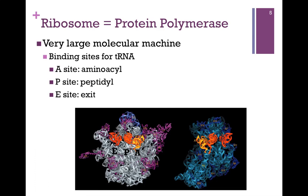There are three binding sites for tRNA within the ribosome. The A site, or aminoacyl site, is where the incoming tRNA will base pair to deliver the next amino acid to add to the chain. In the center is the P site, or peptidyl site, where the chain extends or grows. The final site is the E site, or exit site — once the amino acid has been delivered and transpeptidation has occurred, the empty tRNA will move to the E site and eventually exit the ribosome.